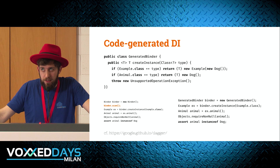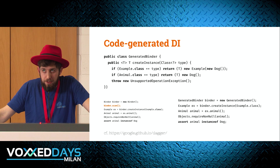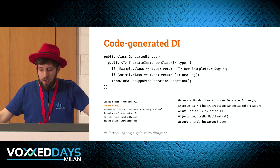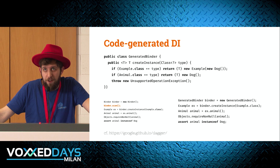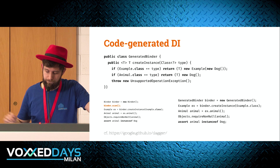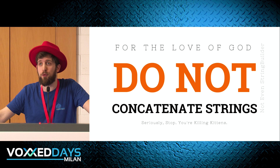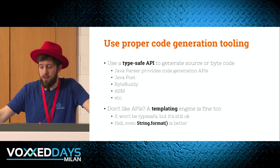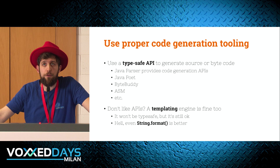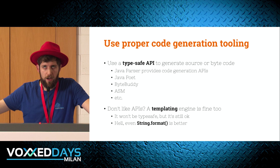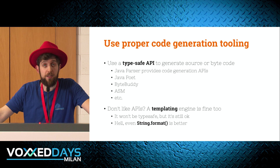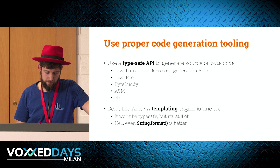Imagine if the binder class was replaced by what you would write if you coded a factory by hand — this could be generated automatically. If you want to generate code, please do not concatenate strings. Use a proper library. There are type-safe APIs to generate source code — JavaPoet is one. If you want to generate bytecode, you can use ByteBuddy, ASM, and others. If you prefer templating, use templating — even String.format is better than string concatenation.